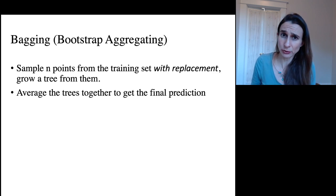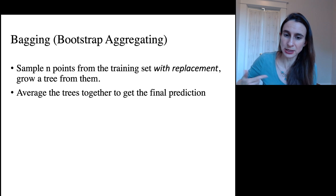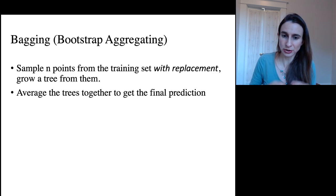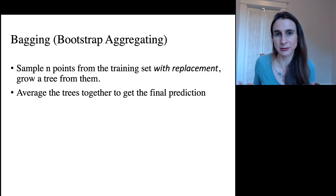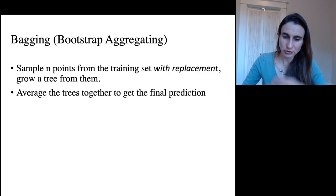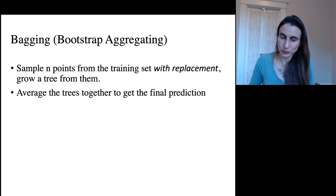When you're sampling with replacement, that means you could sample the same data point multiple times in your data set that you create the tree from. And it can also mean that you leave out some of the training set when you create the tree. So you have these slightly different data sets, and then when you build these trees from them, the trees are all different from each other.